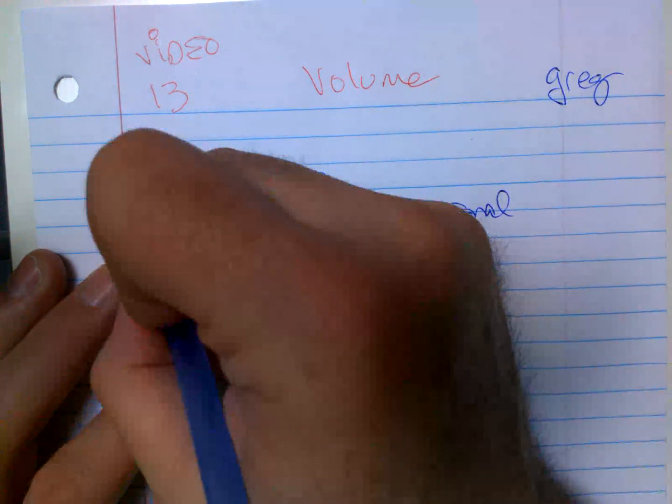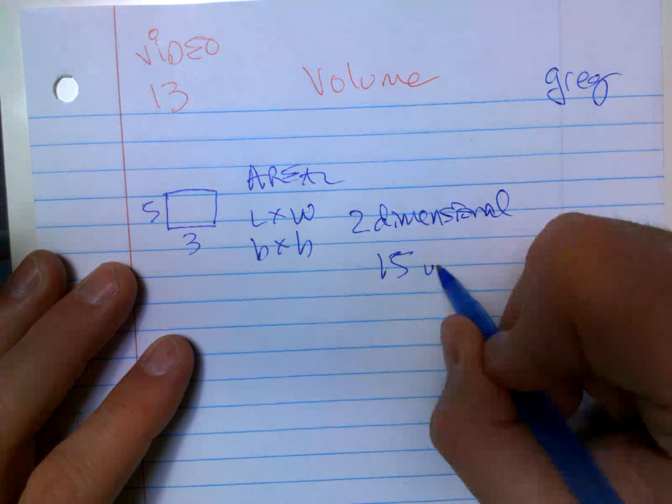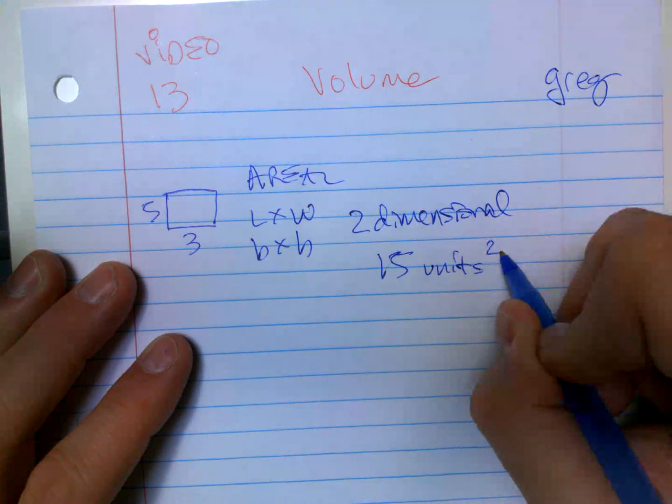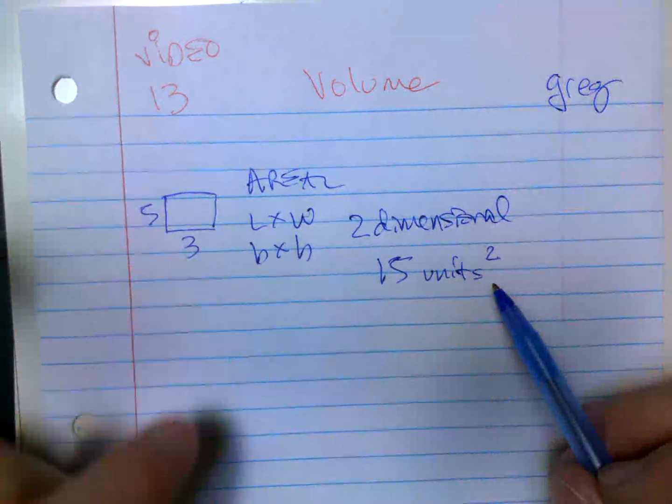So when I'm done, if this was five times three, I'd say 15 units to the second power squared because it's two-dimensional, length times width.